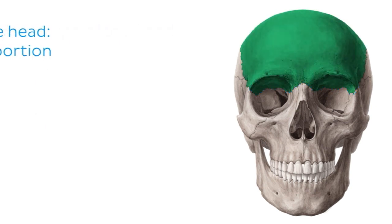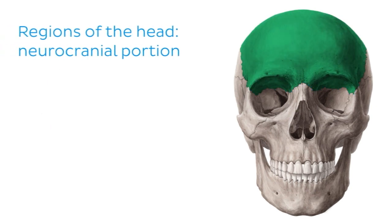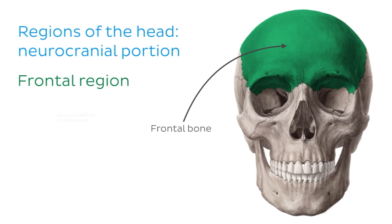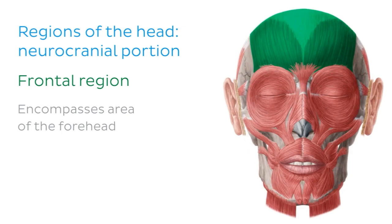First, let's look at the neurocranial portion of the regions of the head. These regions are named according to the underlying bones, with the exception of the auricular region which we'll discuss later on. The first region we'll talk about is the frontal region, situated at the front of the head overlying the frontal bone and encompassing the area of the forehead. The frontalis muscle, highlighted in green, is also found in this region.